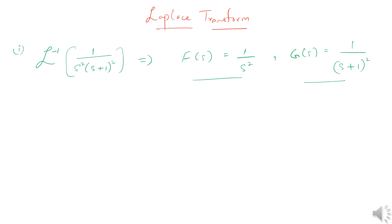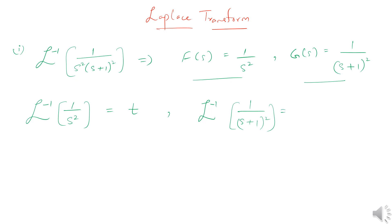Now we know that the inverse Laplace transform of F(s), that is 1 over s-squared, equals t. And the inverse Laplace transform of 1 over (s+1) whole squared equals t multiplied by e raised to the power negative t. These concepts have been discussed in previous classes.